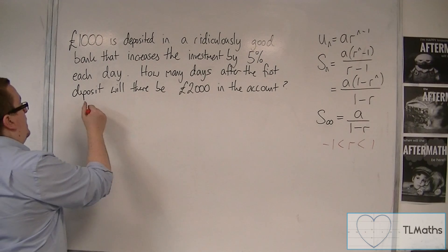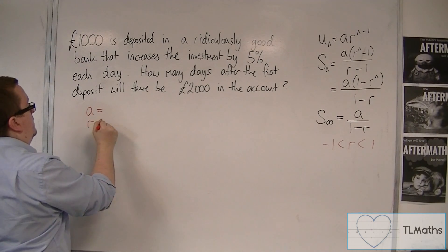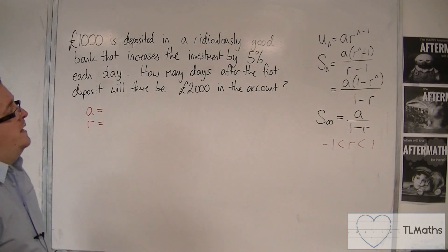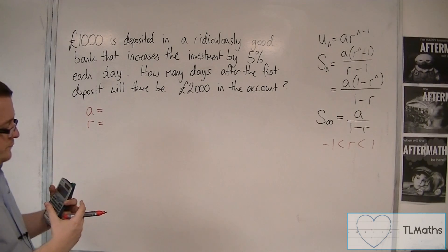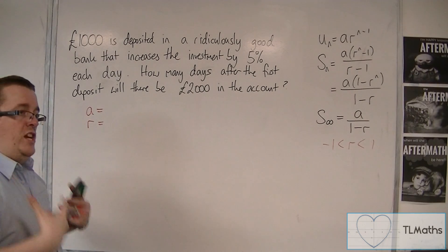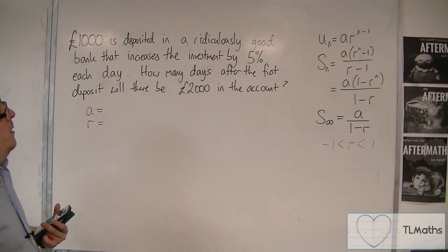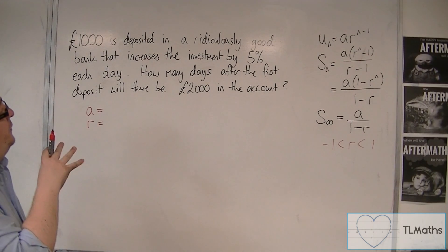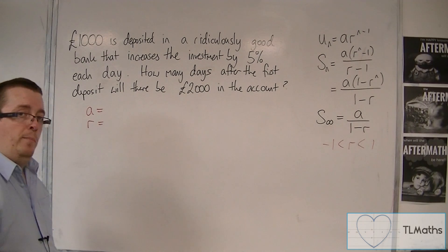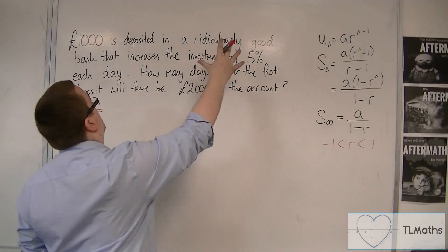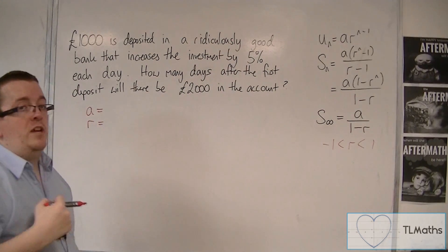So we're going to start off by writing down A and R, because this is clearly a geometric problem. We have a first term and we are multiplying it by a certain amount, this 5% each day.